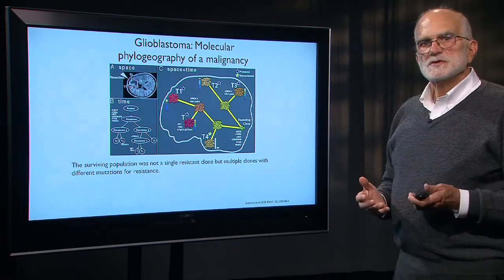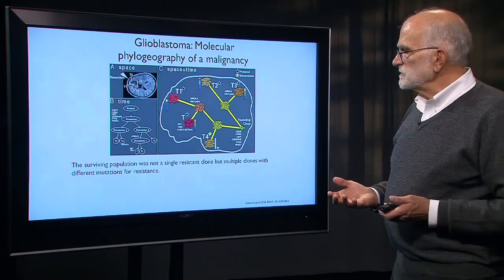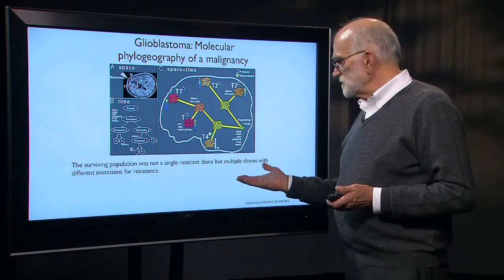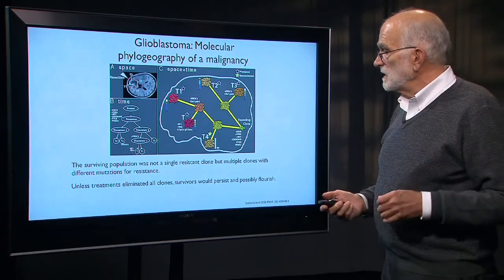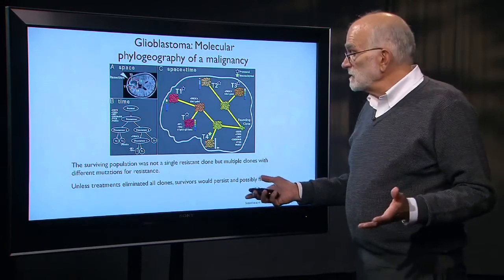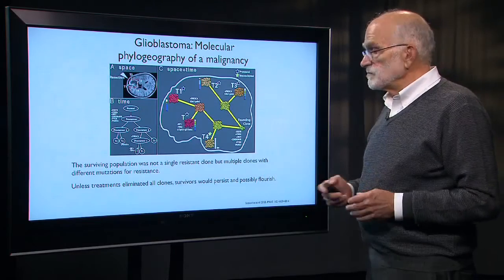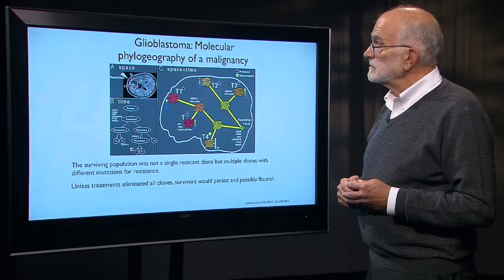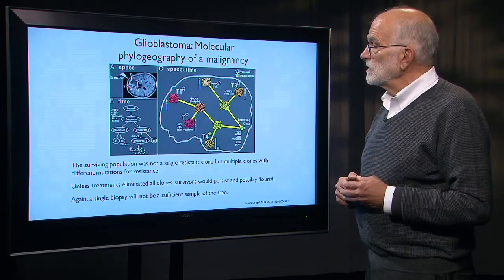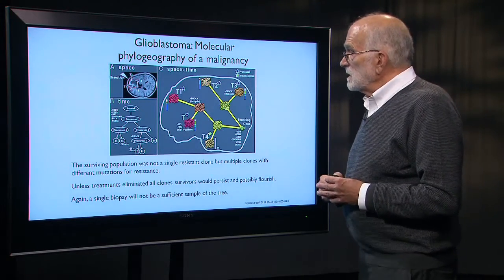Now, the population that survived, the population of clones that survived, wasn't a single resistant clone. But again, it was multiple clones that had different mutations for resistance. Unless treatments eliminated all clones, the survivors would persist and they would possibly flourish.